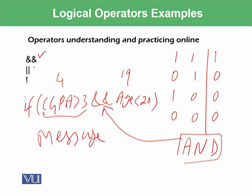The next operator is the OR operator. The OR operator, which we also studied in computer architecture, says that if either of the conditions is true, the overall result will become true. And the NOT operator toggles the previous state. So if we have a true condition and you put NOT, that condition becomes false. And if we have a false condition and you put NOT before it, it becomes true.